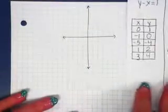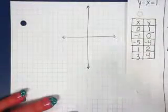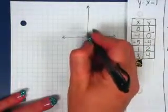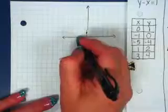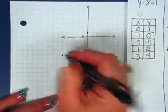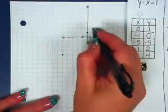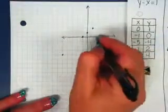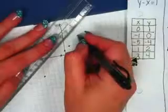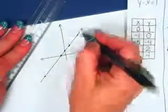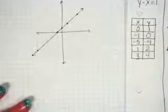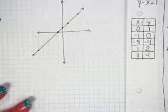Now we're going to graph that. Our points are (0, 1), (-1, 0), (-5, -4), (1, 2), and (3, 4). Plot each point, then use a ruler or straight edge to draw the line. Make sure you're putting arrows on both ends because the line goes on forever — it never stops.